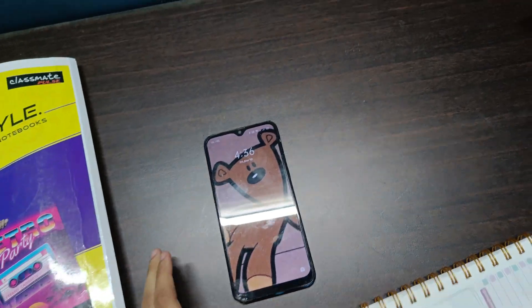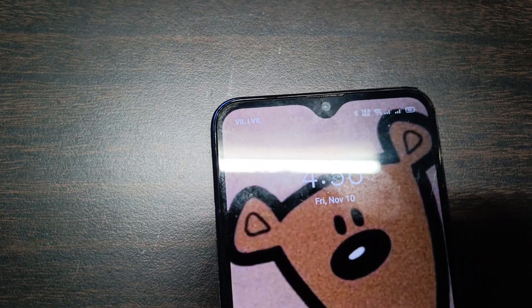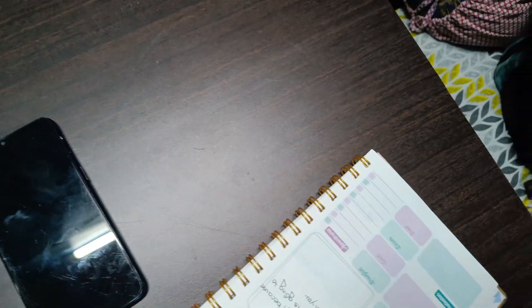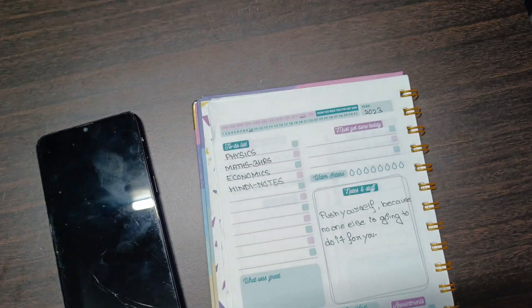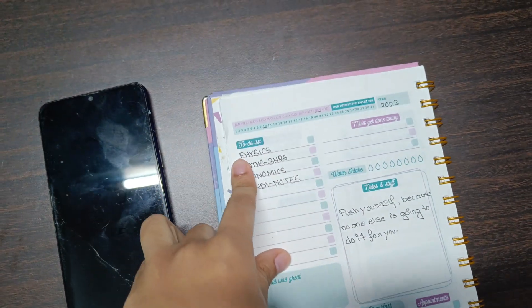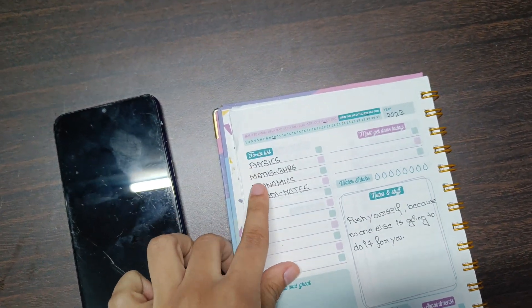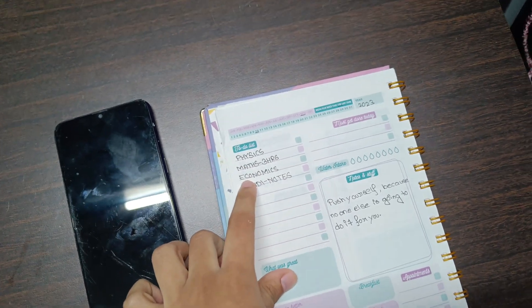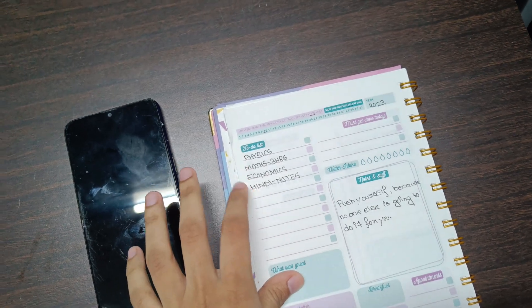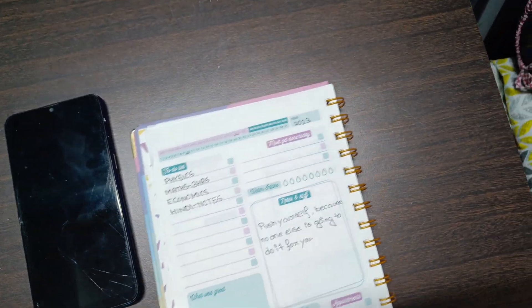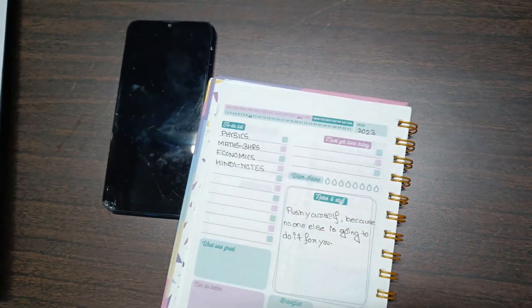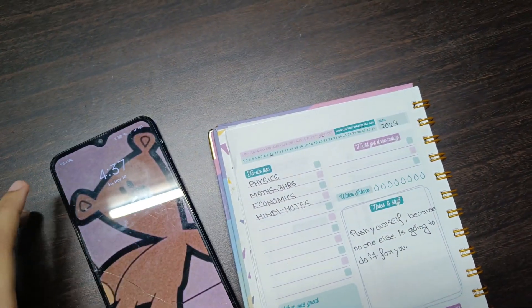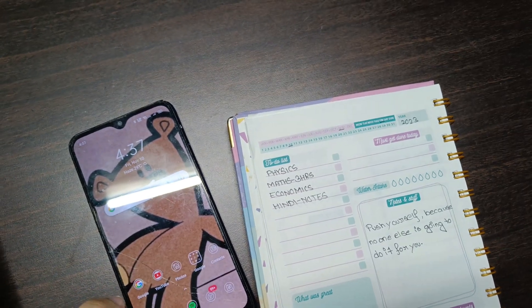Hi everyone, so today is 10th November, Friday, and it's currently 4:36. This is my to-do list for today: I'm going to do physics, the chapter Magnetic Effects of Electric Current, math for three hours - currently doing the chapter Probability, Economics, and notes of Hindi. So yeah, that's my to-do list for today, and right now I'm going to put a timer of one hour thirty minutes for doing mathematics.